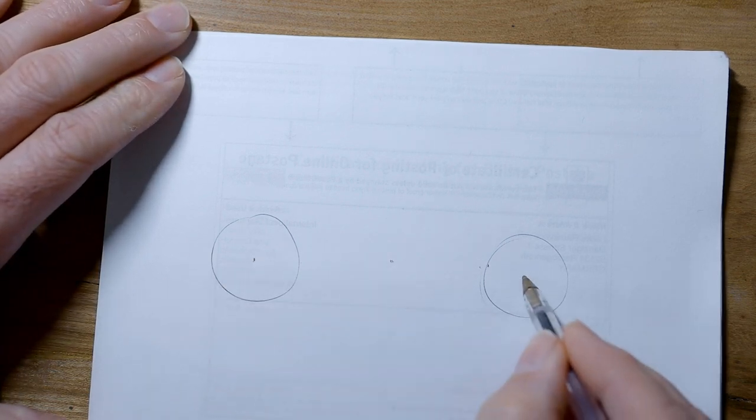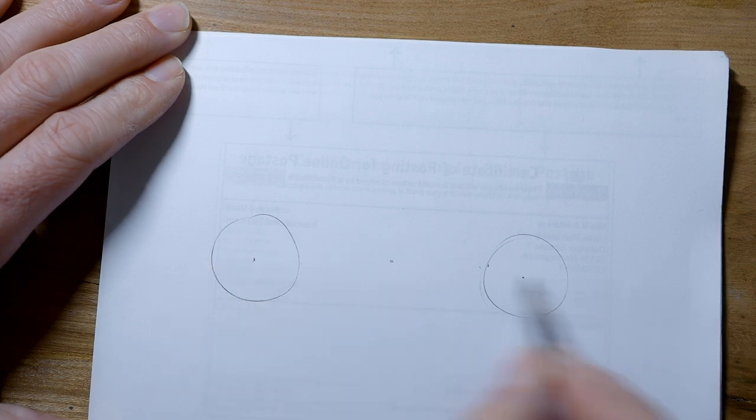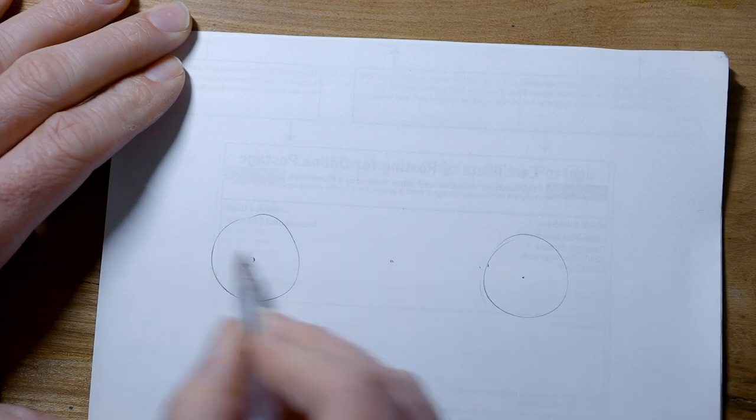The next thing we need, if we do the centres of the wheels there, is a horizontal line that's level with the centres of the wheels. It's going to be the bottom of the car.